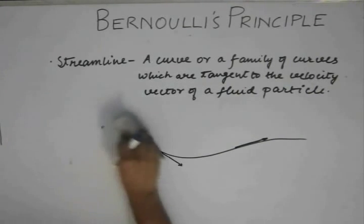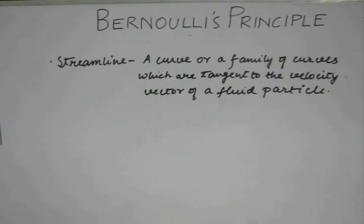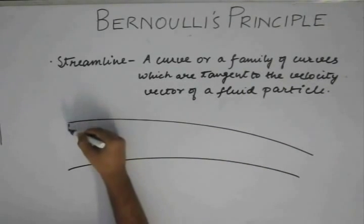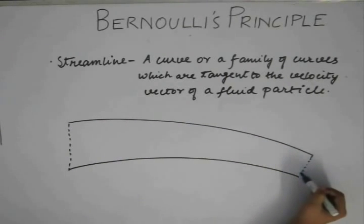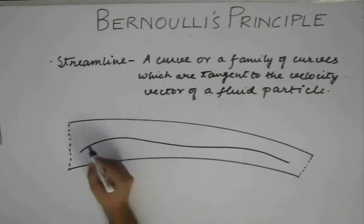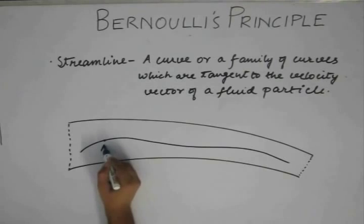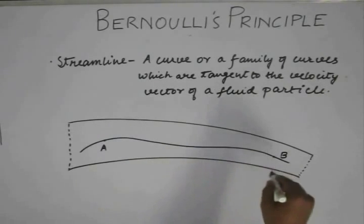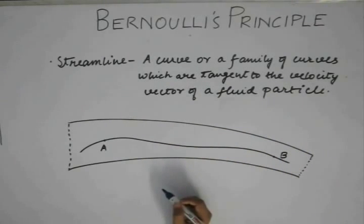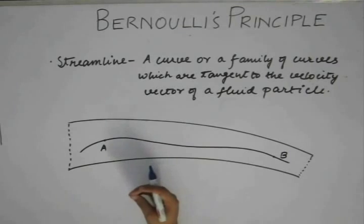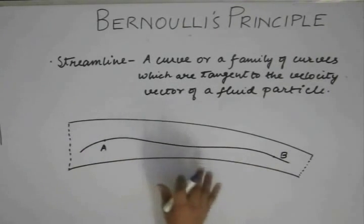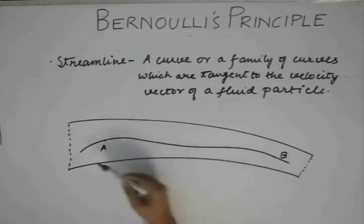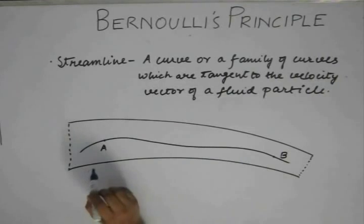Consider a duct or pipe through which a fluid is flowing. The fluid enters from one end and exits from the other, and we define an arbitrary path inside the pipe with point A and point B. This path is a streamline. One property is that the path from A to B traced by each particle is identical.